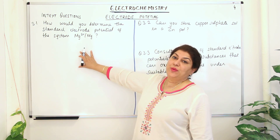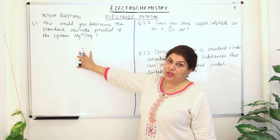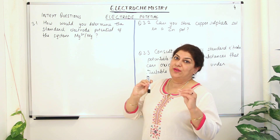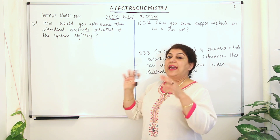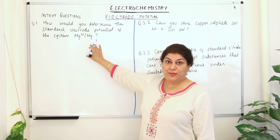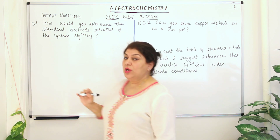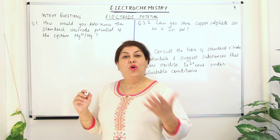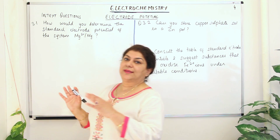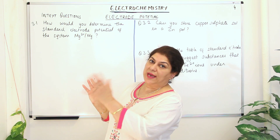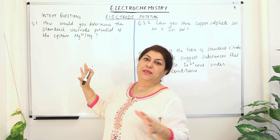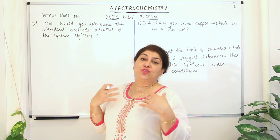So in this case we are going to take hydrogen as the reference electrode and make a cell out of the hydrogen electrode and the magnesium electrode that has been given to us. Normally, you would make the hydrogen electrode to be the anode and whatever other element is given to you, you make it the cathode — we are just assuming this.